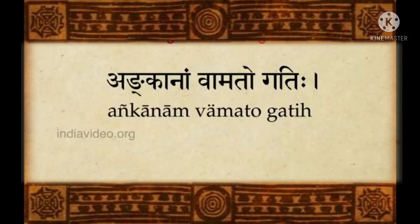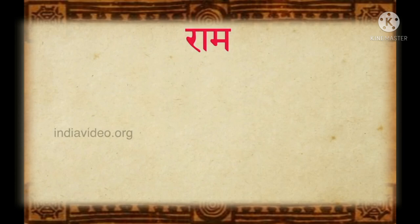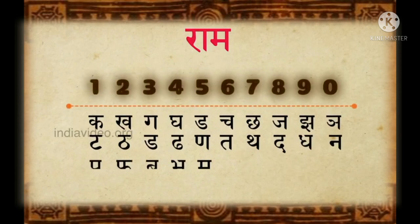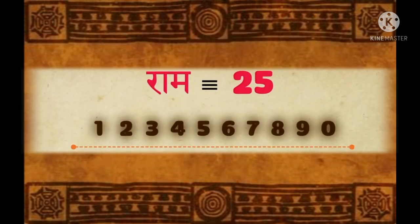A few simple rules have to be followed when encoding and decoding numbers under the Katapayadi system. The algorithm says that the numbers move in their place value from left to right — the least significant decimal place is written first on the left and the most significant is written last on the right. The decoding works from right to left. For example, 2765 is written as 5672 but read as 2765. The name Rama would correspond to 25 in Katapayadi, but when we apply this rule, Rama becomes an encoding for the number 52.